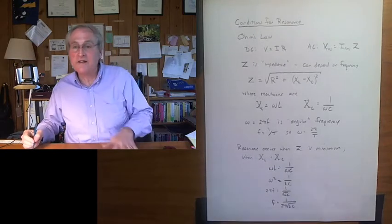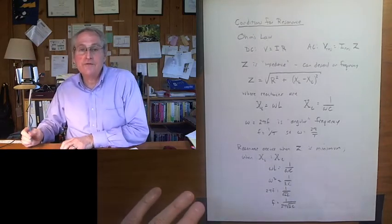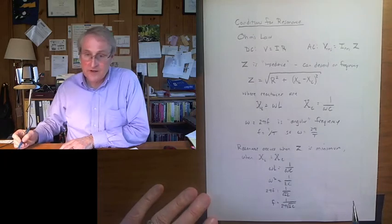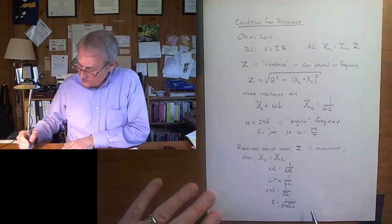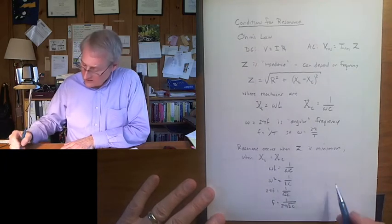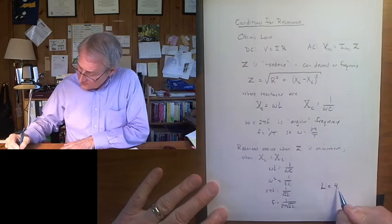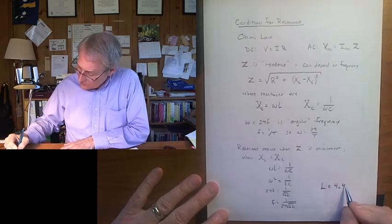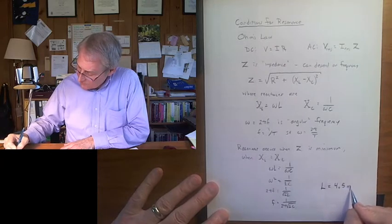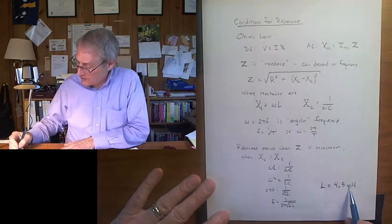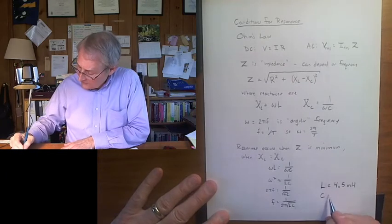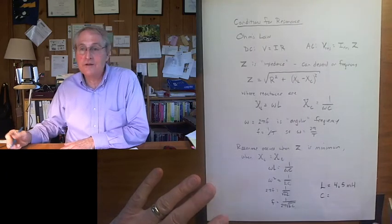So you can compute what the expected resonant frequency is from this. You need to know for our circuit, L will take to be 4.5 millihenries. That's the unit of inductance, and milli is 10 to minus 3.